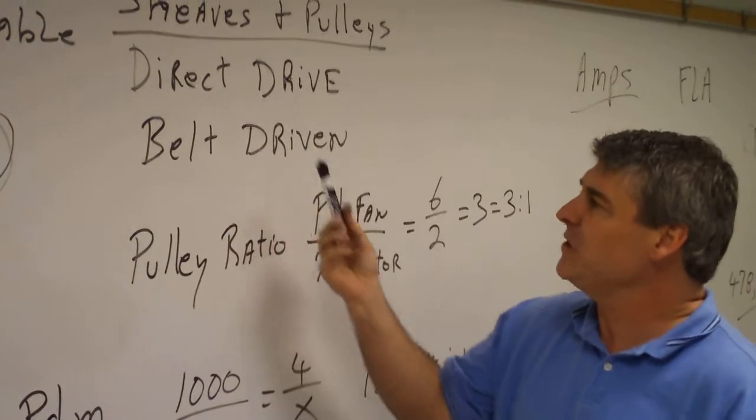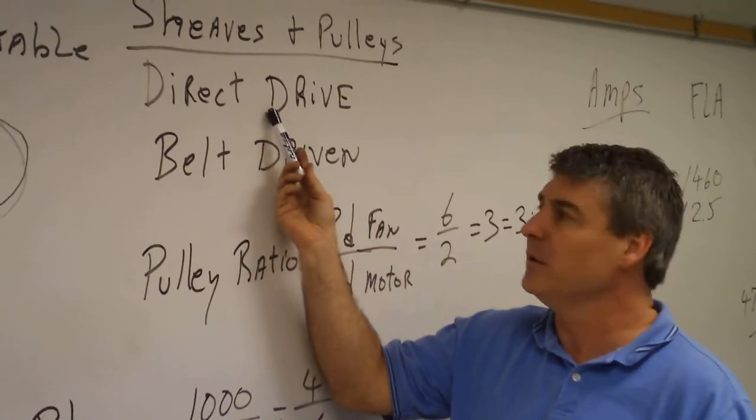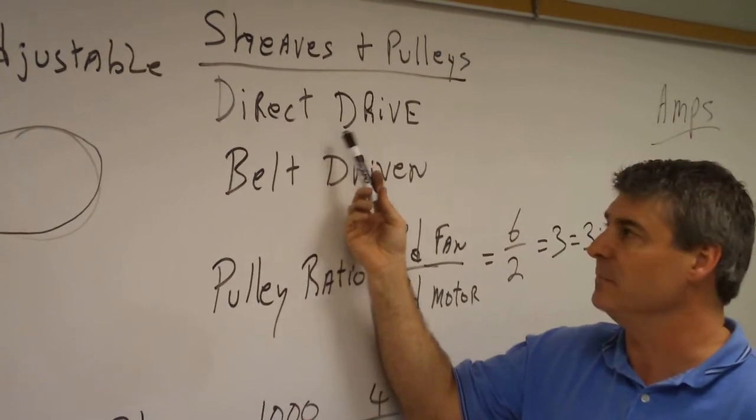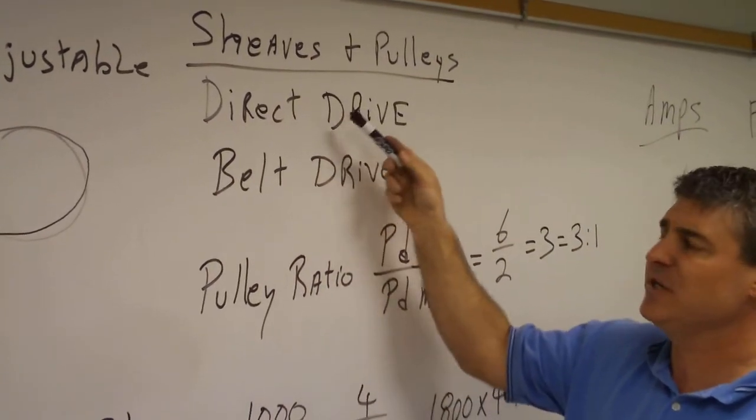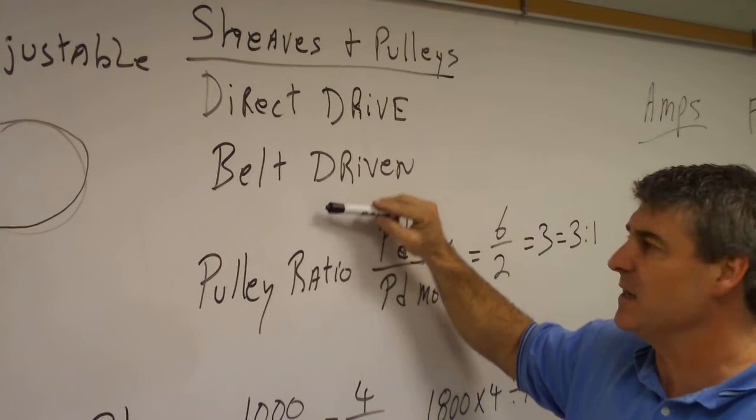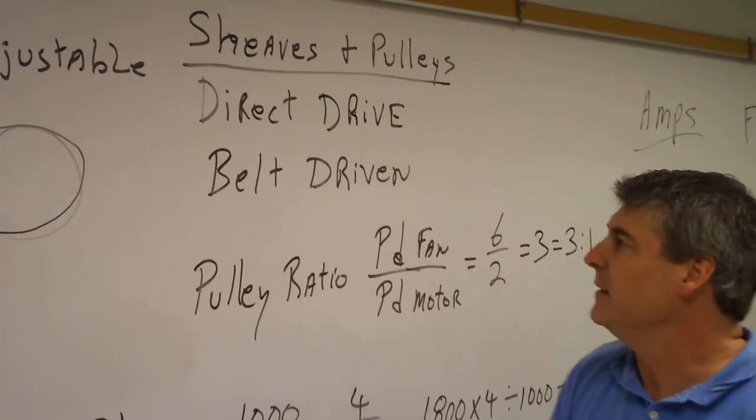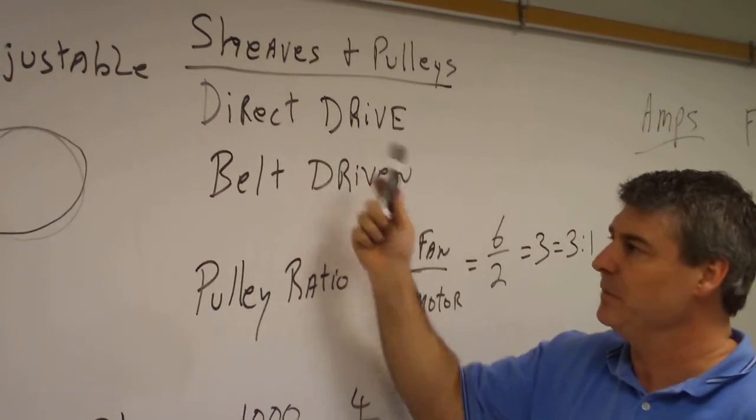These are mostly smaller moving air handlers, residential type oil furnaces, different things like that. Although you still see some of the second type we're going to discuss, which are called belt driven blowers. This is a little bit different than a direct drive system.